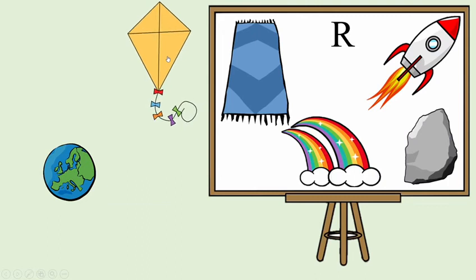Why do you think this picture refuses to get inside the board? Yes, because this picture starts with the letter K and K is for kite. Well done.